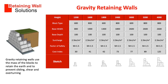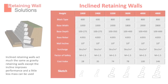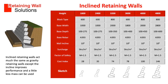This is a gravity retaining wall. Gravity retaining walls use the mass of the blocks to retain the earth and to prevent sliding, shear and overturning. Inclined retaining walls act much the same as gravity retaining walls except the incline improves performance and a little less mass can be used.